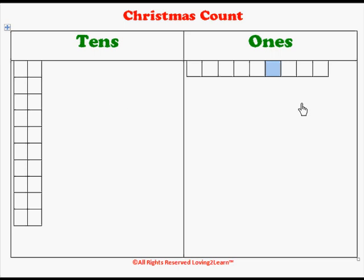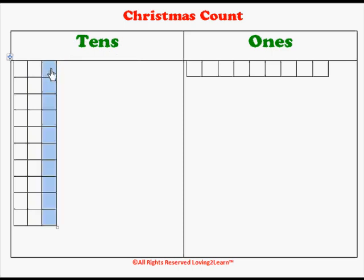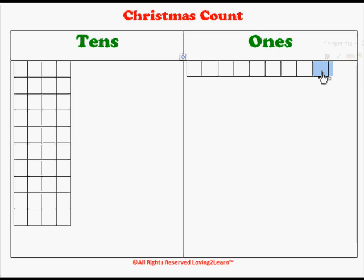The ones cannot have more than 9 in it. So if I have 29, I would have to add to the tens side. Right now I have 29 — what if I add 1 to the tens? 39. How about another one? 49. What if I take 1 off the tens? I have 39.